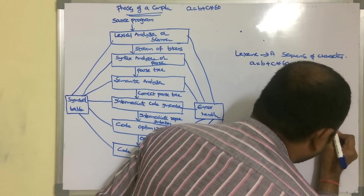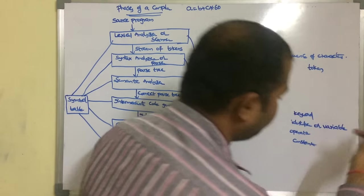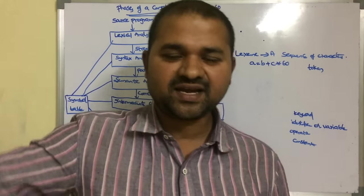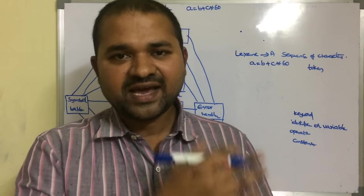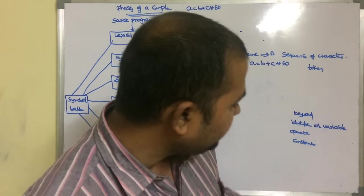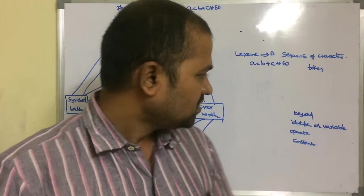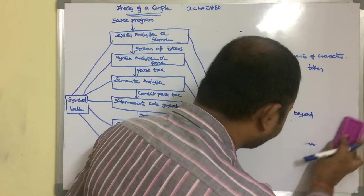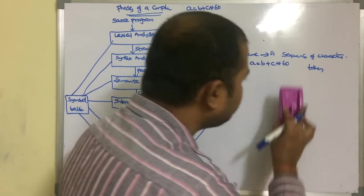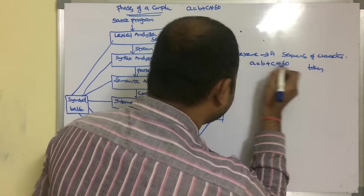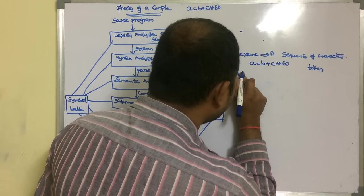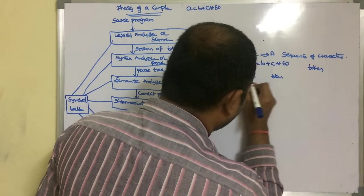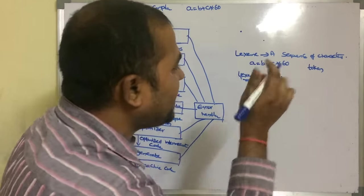An identifier is nothing but the name of a variable. We have arithmetic operators, relational operators, logical, assignment, bitwise, and conditional operators. A constant means a fixed value. So tokens are nothing but keywords, identifiers, operators, and constants. Each lexeme is represented in the form of a token. Let's write the lexemes and tokens for our program.